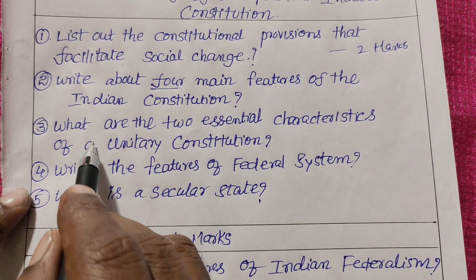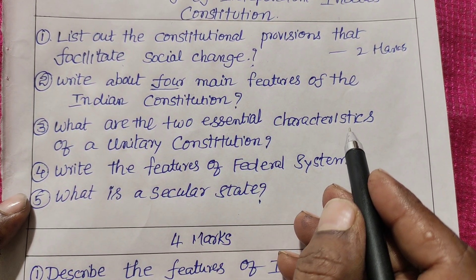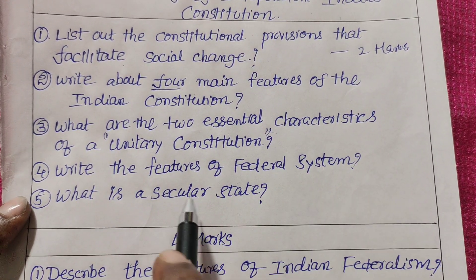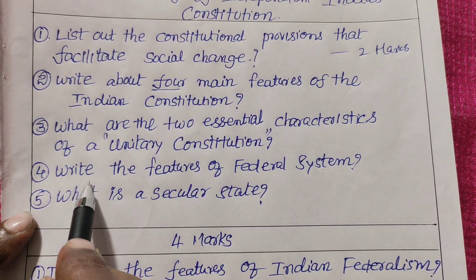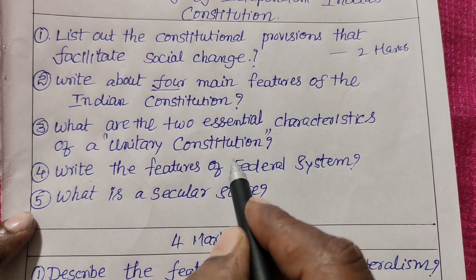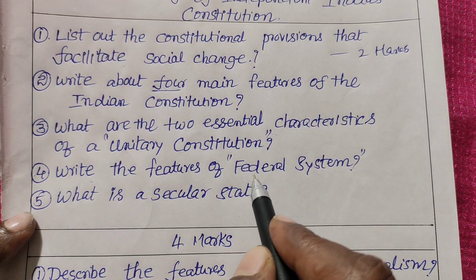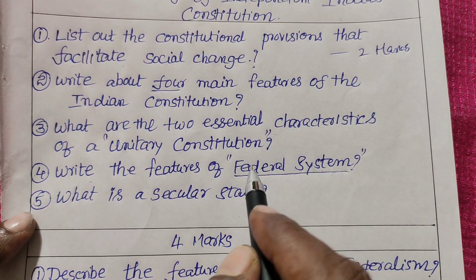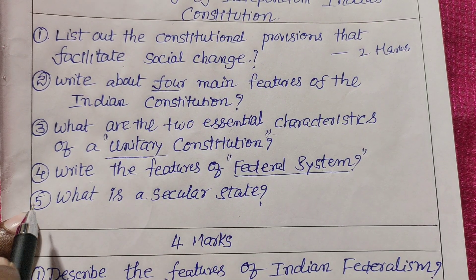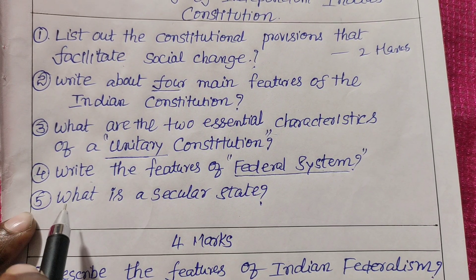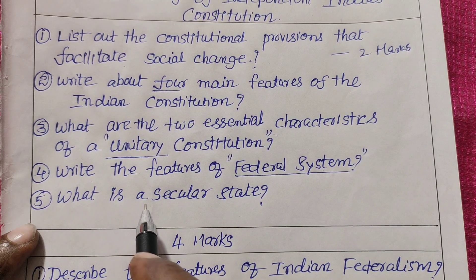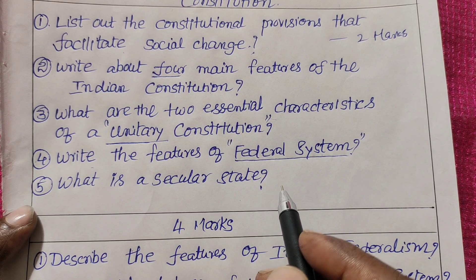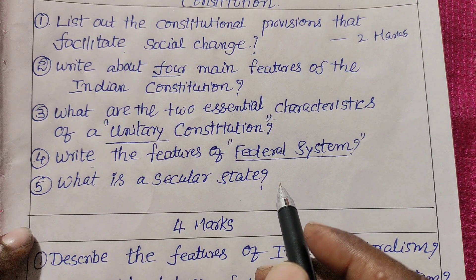Third: What are the two essential characteristics of a unitary constitution? Fourth: Write the features of the federal system. Also write the basic principles of the constitution — covering both federal and unitary systems. What is a secular state?